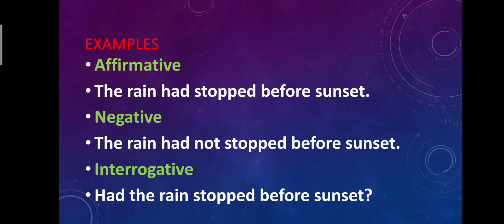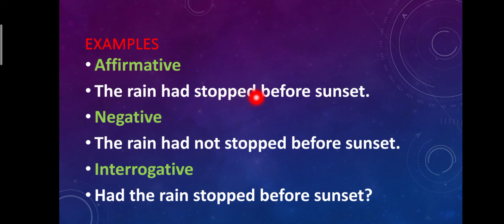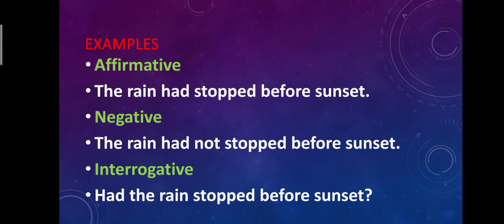Now examples. The rain had stopped before sunset — this is the simple or affirmative sentence of past perfect. Its negative: The rain had not stopped before sunset. Now interrogative: Had the rain stopped before sunset?